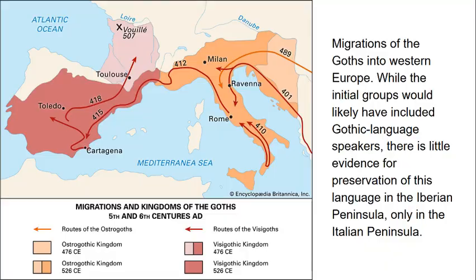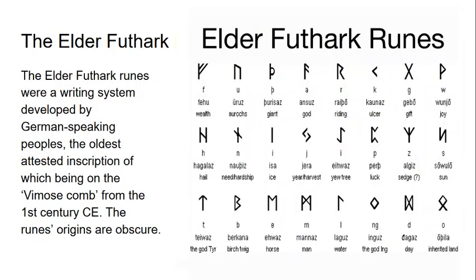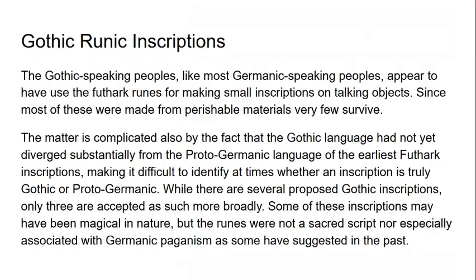The Goths initially, like any Germanic people, wrote their language using the Elder Futhark runes — a writing system developed by Germanic-speaking peoples. The oldest inscription is on the Vimose comb from the first century CE. The runes have quite obscure origins but seem to have derived from some kind of Italic alphabet with influences from Greek scripts, though it's a complicated subject.